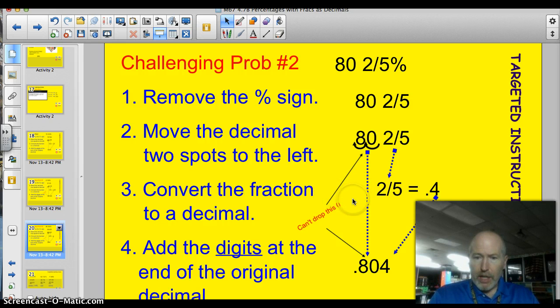Step number three, convert that fraction to a decimal. Well, 2 fifths is 0.4. And now, step four, add it on. Here's my 0.80. Just add on the 4. This 0 you can't drop. Otherwise, it would be 84%. But that's not what it is. It's 80.4 was our original percent. Remember, 80.2 or 80 and 2 fifths. So, 0.804 would be your decimal.